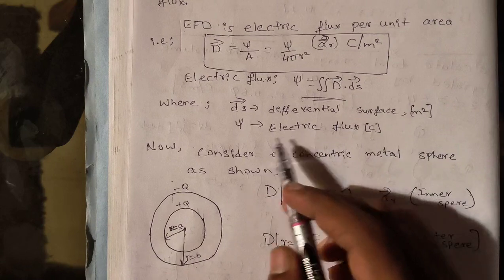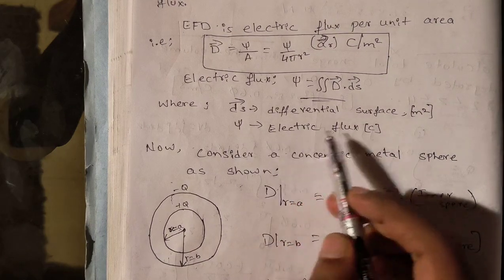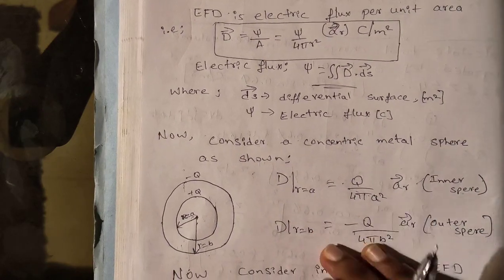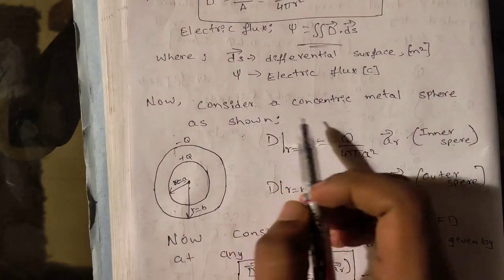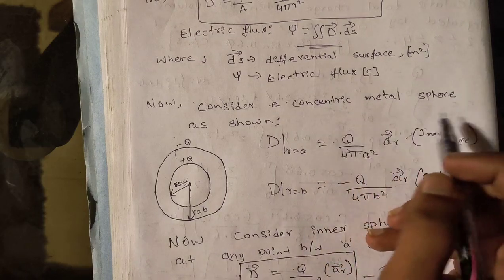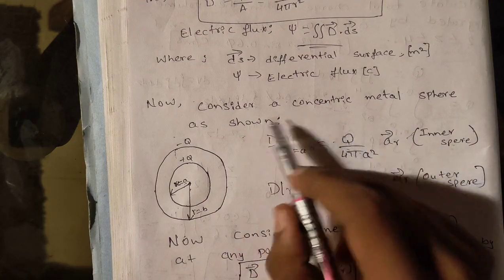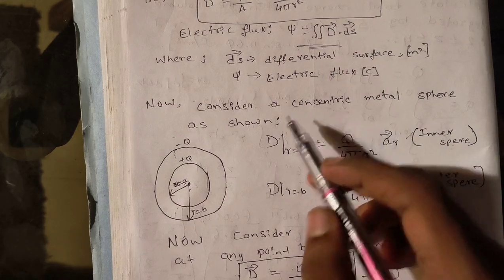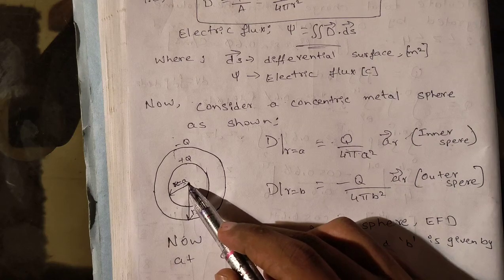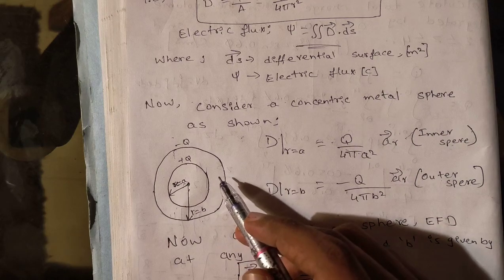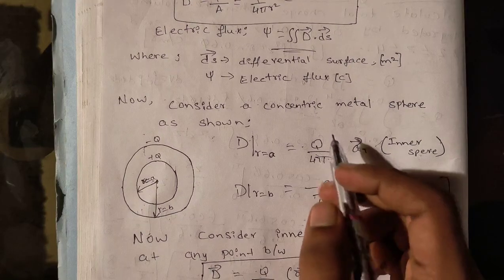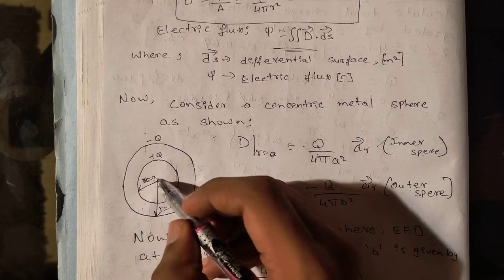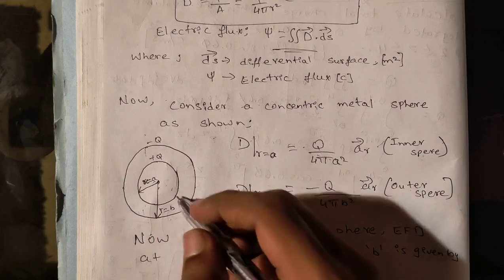Then electric flux Ψ is equal to surface integral D dot dS, where dS is differential surface in meter square, and Ψ is electric flux in Coulomb. Now, consider a concentric metal sphere as shown. Concentric means two spheres having the same center.